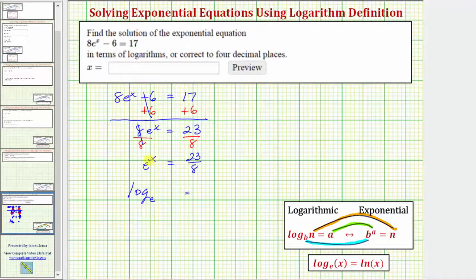A logarithm is an exponent. The exponent is x, so the logarithm equals x. And e^x equals the number 23/8, which means we have log base e of 23/8 equals x. Notice how the equation is now solved for x.